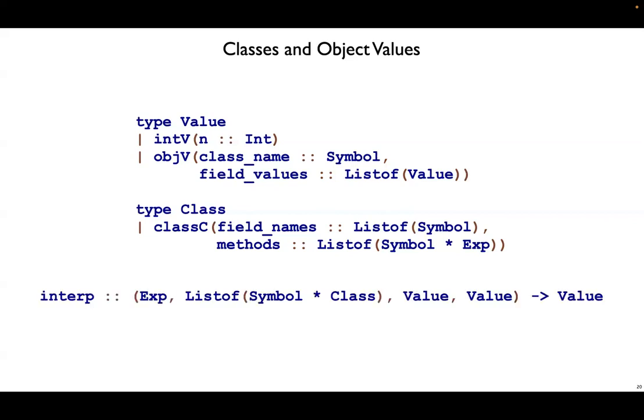For interp, we'll use the following signature. Interp takes an expression, a class table, and two values, and then outputs a value. That second argument maps class names to class values. And then the third and fourth value are for the current object, this, and the method argument, if we're inside of a method.